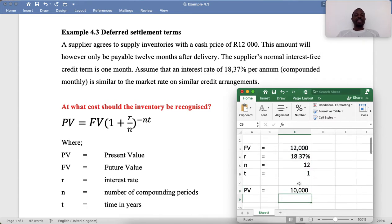So the present value is $10,000. So we need to record this inventory at $10,000. Then the difference between $10,000 and $12,000 would be the finance cost, but the inventory will be recognized at the present value of $10,000.